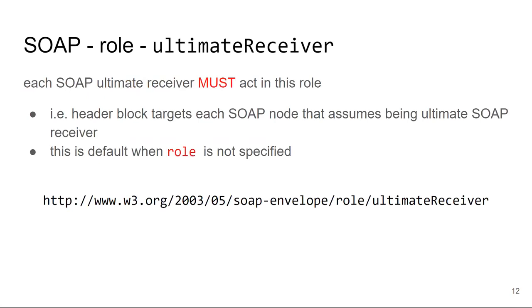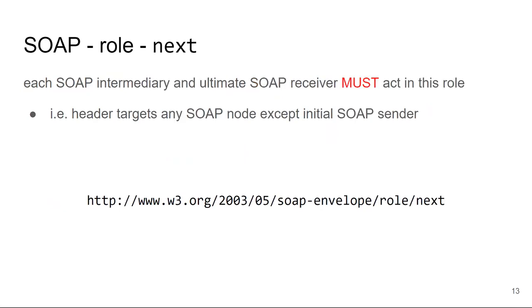Then there is the ultimate receiver role, which is the default when no role is specified on that header block. This means no intermediary should process that header block — it is intended for the ultimate receiver, and the ultimate receiver must process it. With the none role, even the ultimate receiver didn't have to understand the header block. But with the ultimate receiver role, the ultimate receiver must process it. The last standard role is the next role, which means everyone receiving the message with a header block targeting next — every SOAP intermediary and the receiver, basically everyone except the sender — must assume the next role and process any header blocks targeted for it.